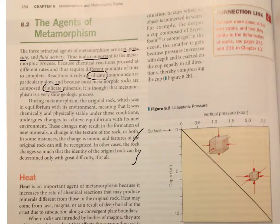During metamorphism, the original rock, which is in equilibrium—oh, I know what equilibrium means, but it's not a part of my everyday talk. I would probably use the word balance. I'm going to go ahead and just jot that in, right over the text. Let me reread that. During metamorphism, the original rock, which was in equilibrium or balance with its environment, meaning that it was chemically and physically stable under those conditions, undergoes changes to achieve equilibrium or balance with its new environment.